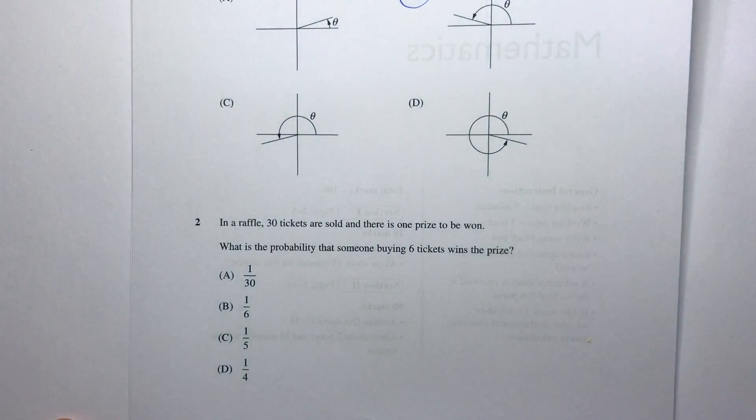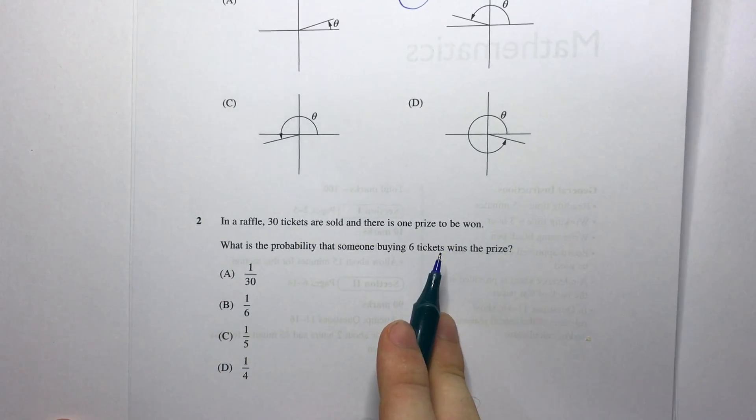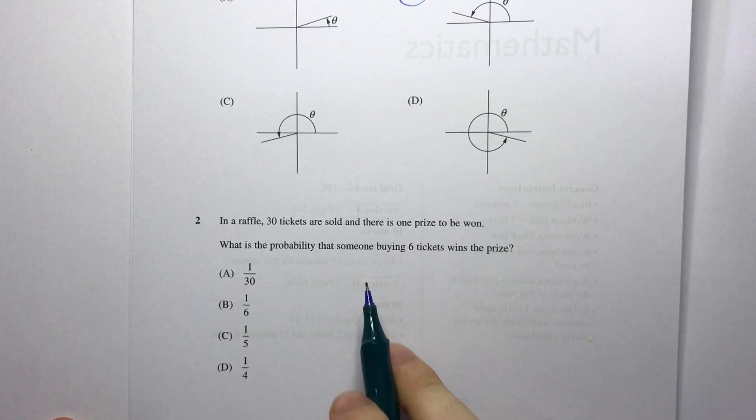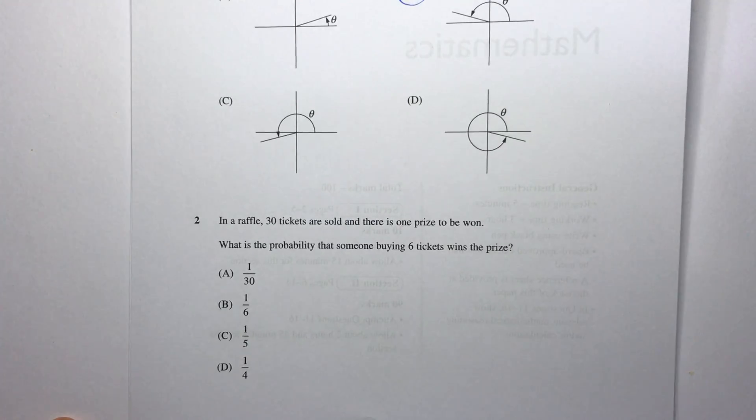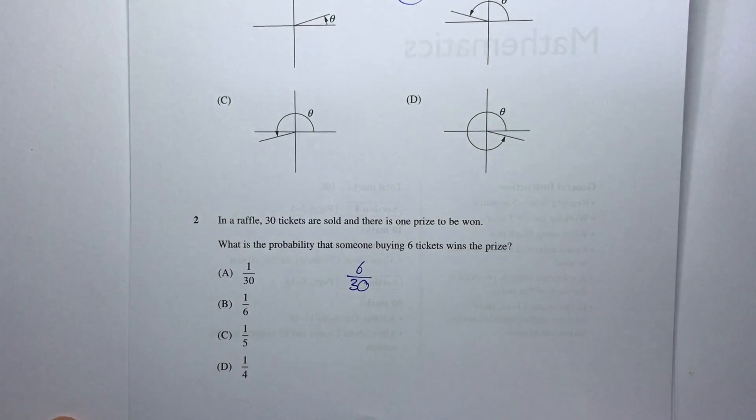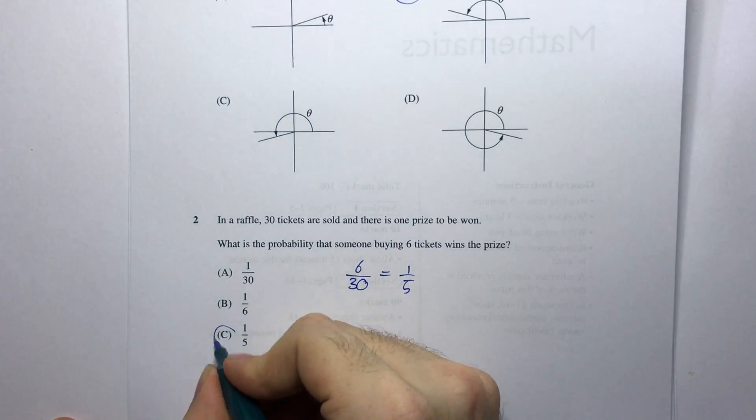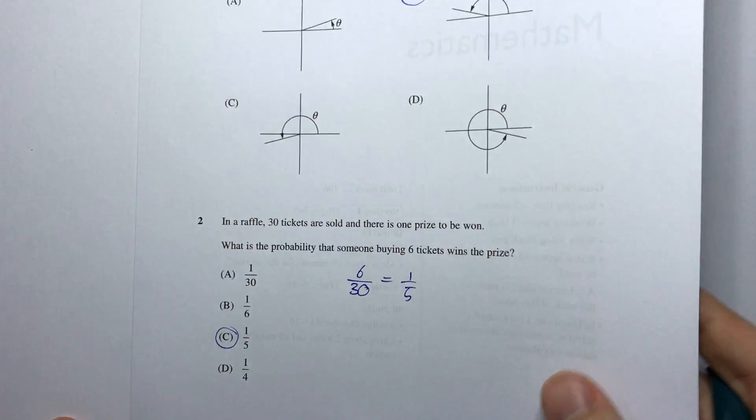Question 2: In a raffle 30 tickets are sold and there is one prize to be won. What is the probability that someone buying six tickets wins the prize? So I buy 6 out of 30. So I have a 1 in 5 chance. That's pretty simple. That's C.